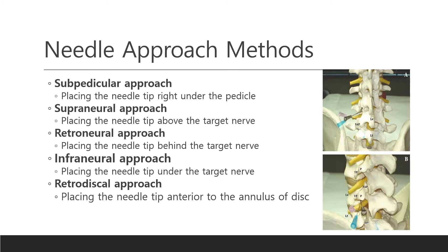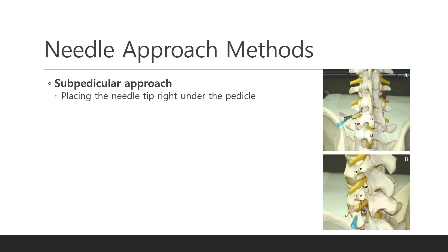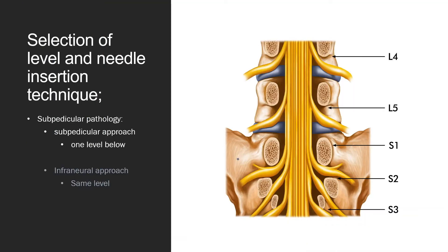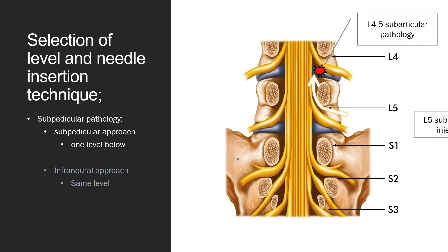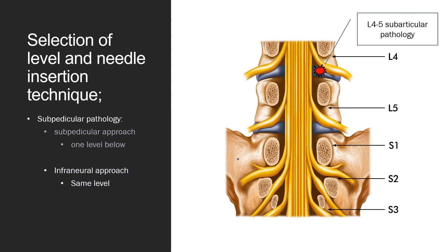There are several needle approach techniques in relieving radicular pain. At this time, I am going to share the subpedicular approach. In the subpedicular method, I place the needle tip right under the pedicle. In subarticular HNP or stenosis, I recommend the subpedicular approach selecting one level below. For example, at L4-5 subarticular pathology, I choose L5 subpedicular injection. Also, I can choose the infraneural approach at the same level.